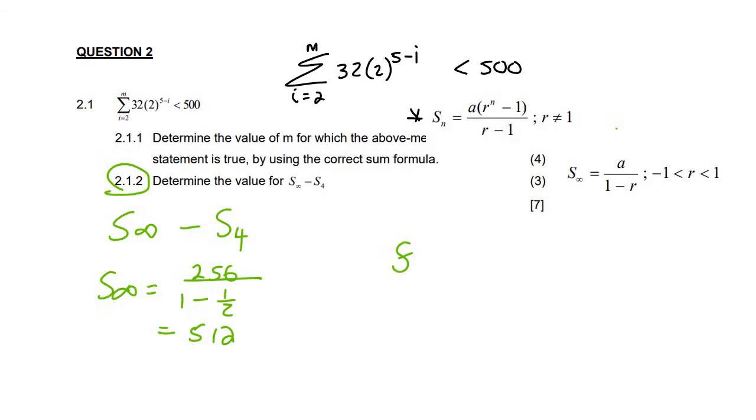And so if we had to go work out the sum of the first four terms now, we use this formula, and so that's going to be a, which is 256, and then the ratio was a half, and then we want the first four terms over a half minus 1. And if you work that out, it gives us 480.